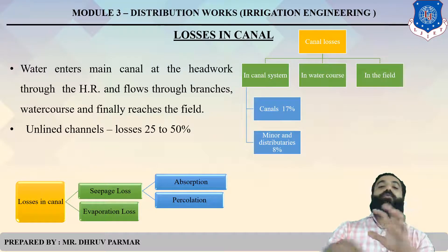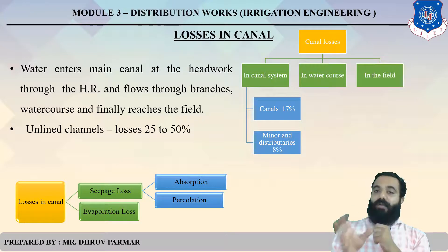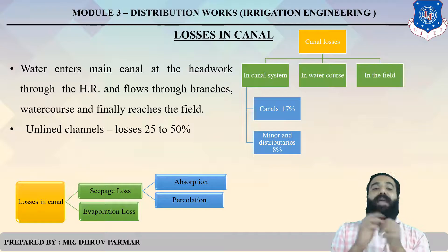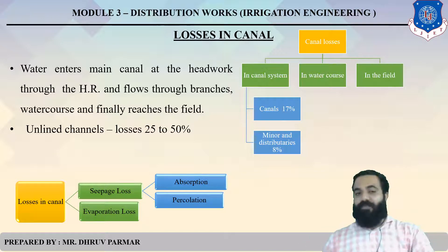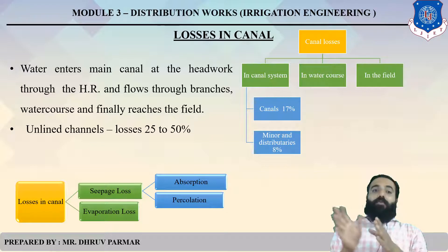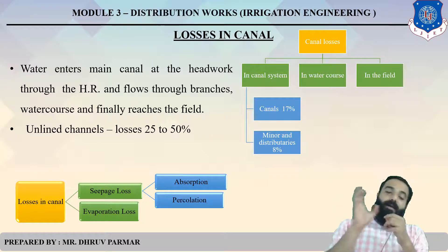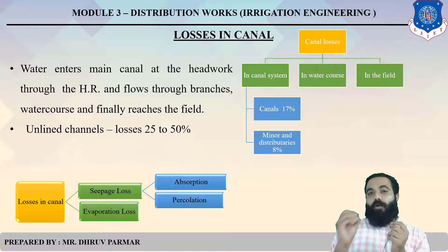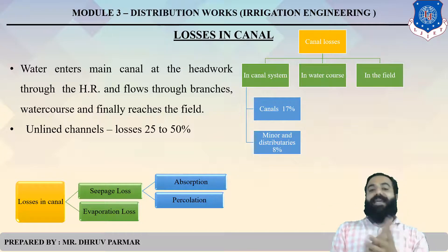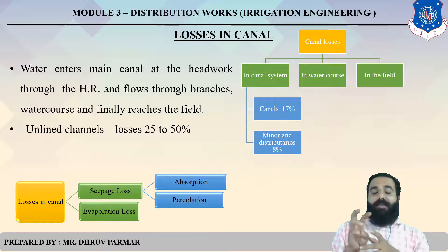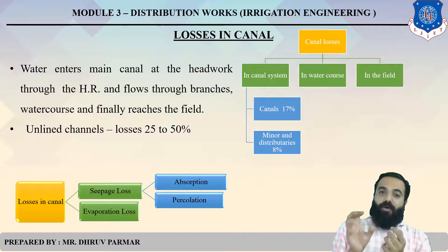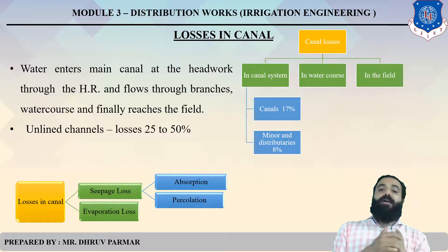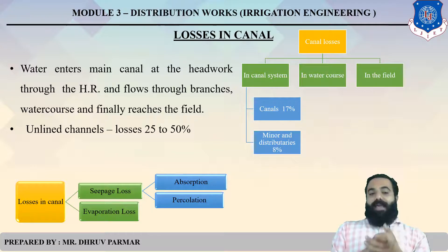Next, there are losses in canals. Water enters the main canal at the headworks through the head regulator and flows through branches and watercourses, finally reaching the field or land. During this journey, there are lots of losses, mostly in unlined canals. The loss in canals is about 17 percent in the main canal, and 8 percent in minor and major distributaries.